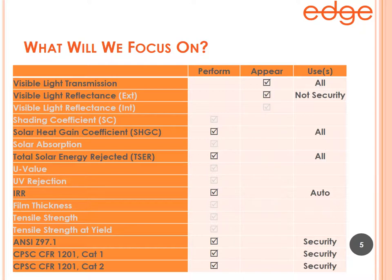In contrast, infrared rejection is only published on automotive spec cards because it is most important to the automotive customer — many IR films are not appropriate on architectural glass. The last three test methods on this list are only present on security films, because when offering and selling Edge security films, those are the three important test methods that people want to know about.